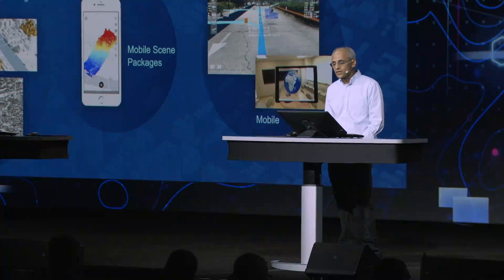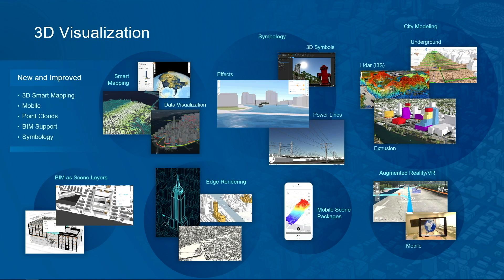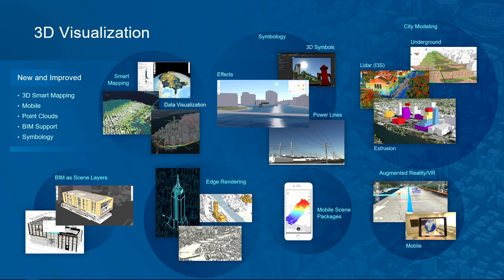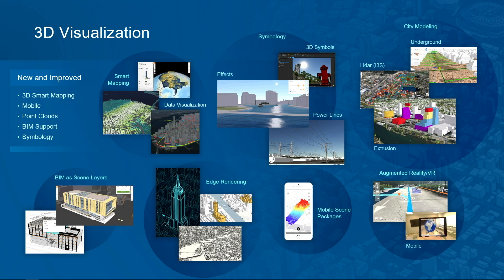3D visualization allows our users to work effectively with 3D objects, integrated meshes, point clouds, and BIM models, as well as with point, line, and area-based GIS features. There have been numerous enhancements to visual quality as well as performance with the latest I3S specifications for these 3D layers. Mobile scene packages allow large 3D scenes to be packaged and used offline in applications like ArcGIS Earth. The 3D platform information model built on web scenes and I3S scene layers is supported by all of the ArcGIS clients across the platform.